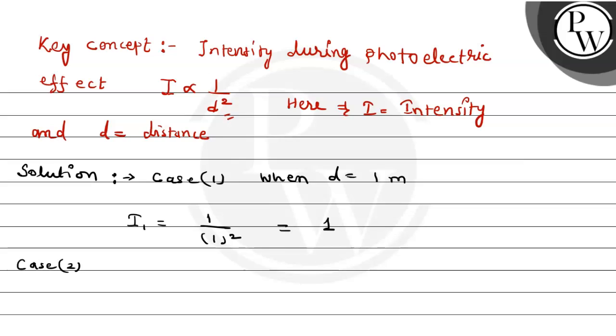Case number two, when aap isko double karte hai, d equals to two meter. Then, intensity become i2 equals to 1 upon 2 square that is 1 by 4. So hamare paas jo result aa raha hai that is i1 divided by i2 equals to 1 divided by 1 by 4. It means to say hamare paas jo i2 ka value aa jaega agar hum i2 ka value calculate karna chahen to i2 ka value aa jaega 1 by 4 of i1. Initial intensity ka 1 by 4.